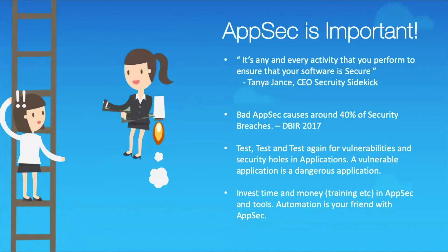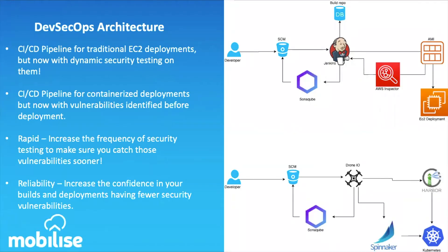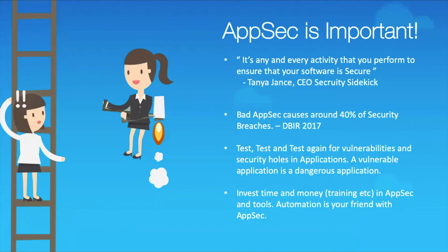Let's talk about AppSec — application security. It is super important and is where a lot of your pipeline security will come from. There's a great quote from Tanya Jay, CEO of Security Guide Geek and a DevSecOps evangelist: 'It's any and every activity that you perform to ensure your software is secure.' Even a unit test helps get you towards being secure. Every test gets you towards the secure platform you want to be at.